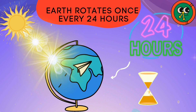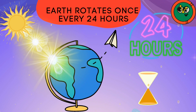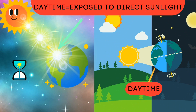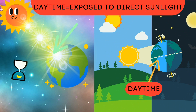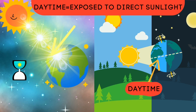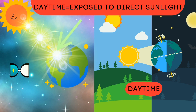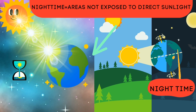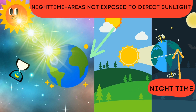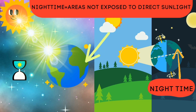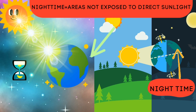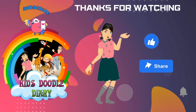The daytime areas are those that are exposed to the direct sunlight, and the nighttime areas are those that are not exposed to the direct sunlight.